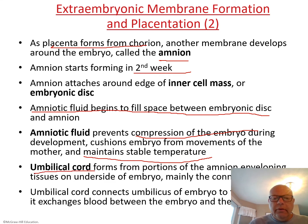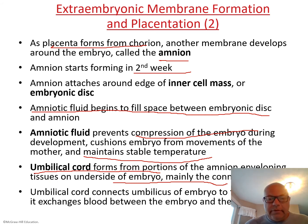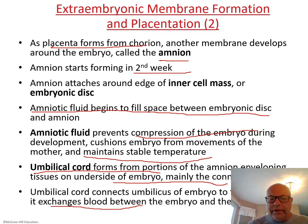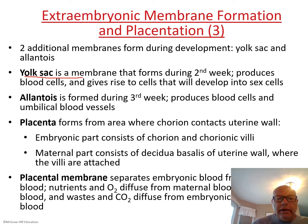Amniotic fluid prevents compression of the embryo during development, maintains a stable temperature, and cushions movements. An umbilical cord forms from portions of the amnion and connects via the placenta — the lifeline between the mother and the developing embryo, where all exchange takes place.